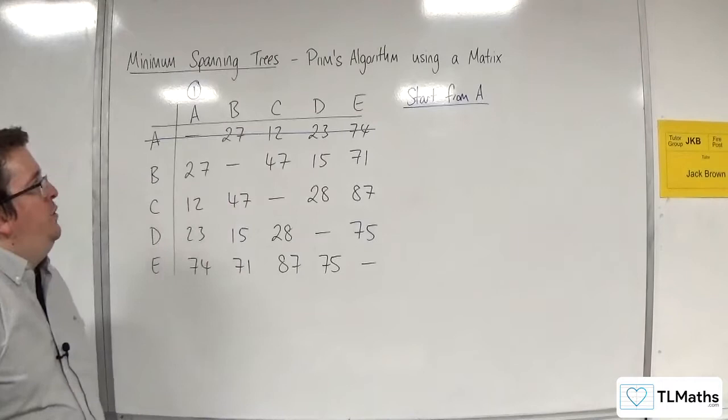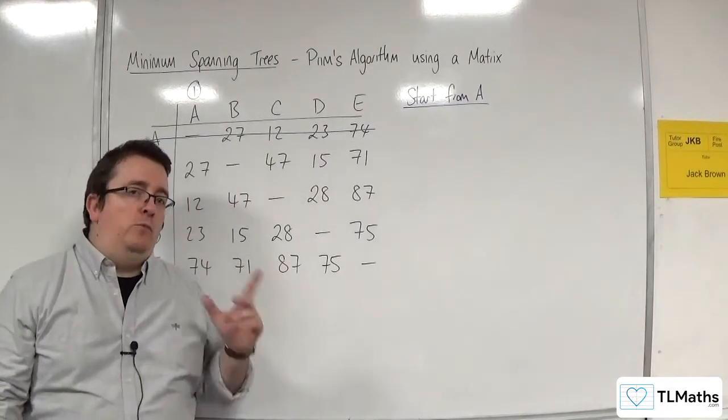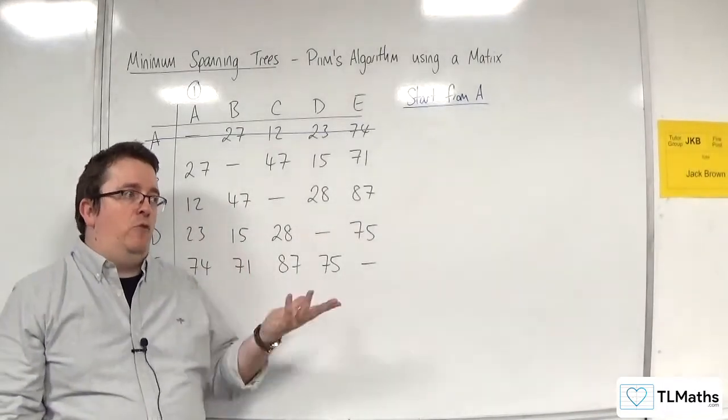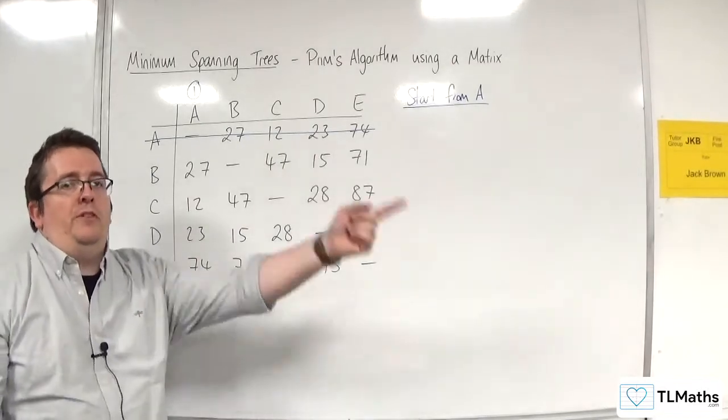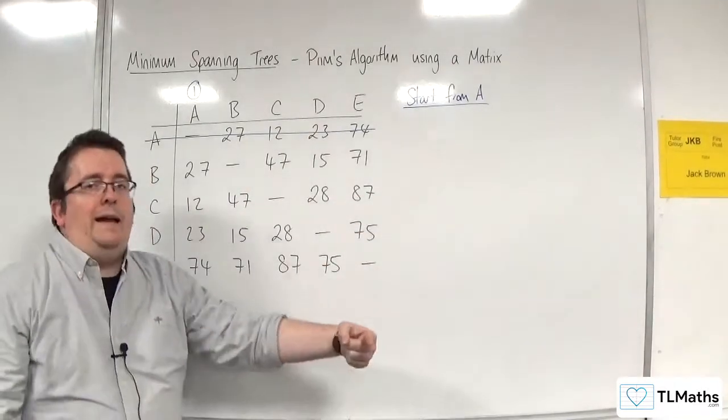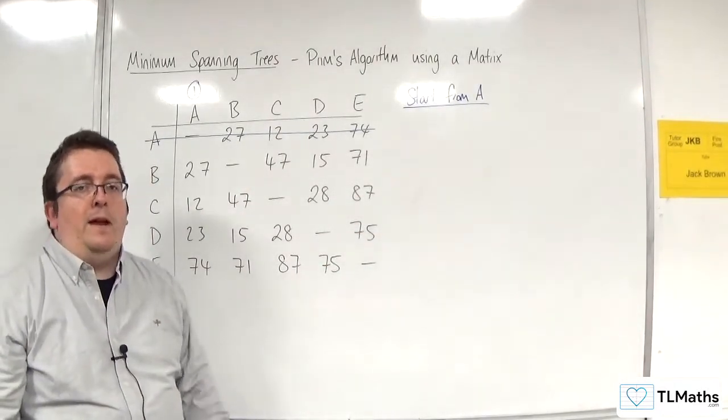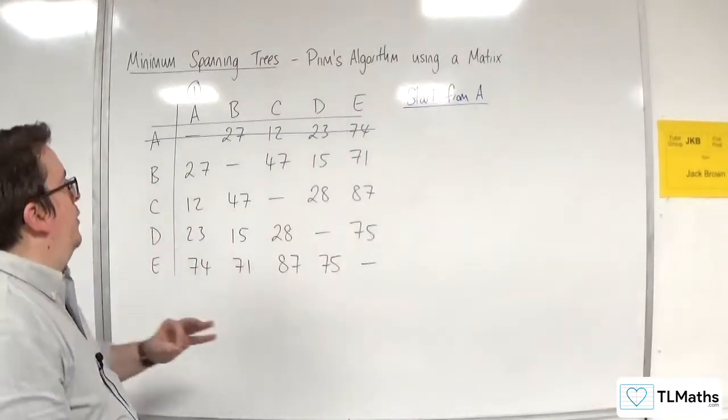Why do you delete the rows? Well, the reason why we delete the rows and we delete row A is it stops us creating a cycle and going back to A. That's why we delete the rows, to stop cycles occurring.